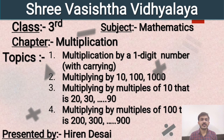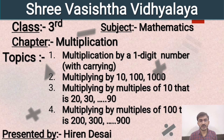Multiplying any number by 10, 100, and 1000. Third topic is multiplying any number by multiples of 10 — that is 20, 30, 40 up to 90. And the fourth topic is multiplying any number by multiples of 100 — that is 200, 300, 400 up to 900. So let us start today's topic.